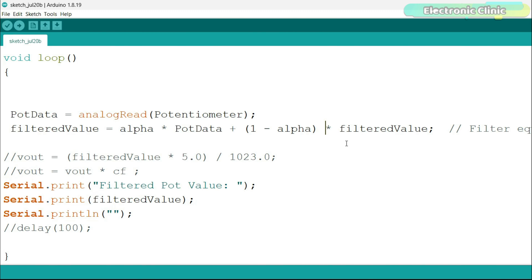Alpha is a filter coefficient between 0 and 1. It controls how much of the new reading will be included in the filtered value. If you want to know more about this equation, read my article available on electronicclinic.com. Anyway, let's go ahead and upload this program.